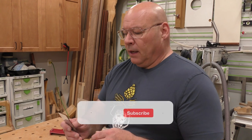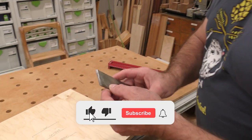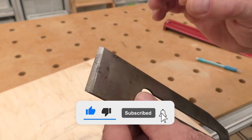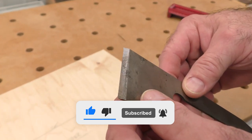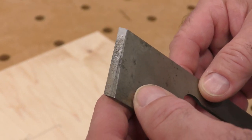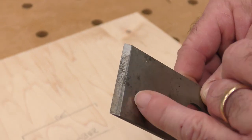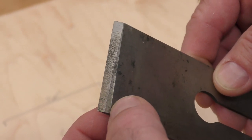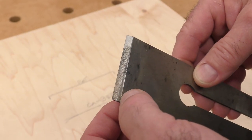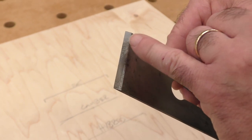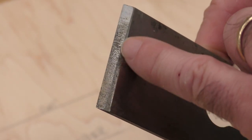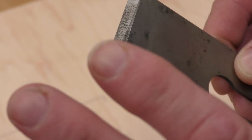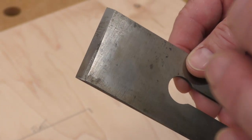First we have to understand what a camber on a plane blade is. I'm going to make my number five jack plane into a smoother. Look at this old blade—see how somebody hand-sharpened this and messed up the bevel? Here's your primary bevel, but look at this secondary bevel—they did it all awkward. That's why using a power grinder or power sharpener we can actually grind that perfect.